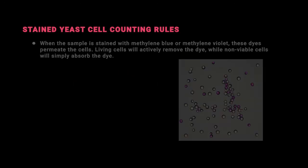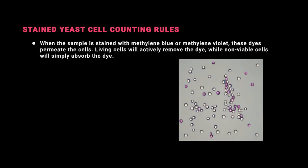Stained yeast cell counting rules. When the sample is stained with methylene blue or methylene violet, these dyes permeate the cells. Living cells will actively remove the dye while non-viable cells will simply absorb it. Stained cells are counted as dead. Budding cells are excluded from viability calculations.